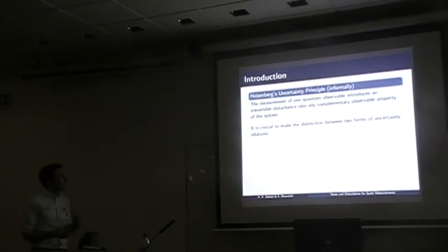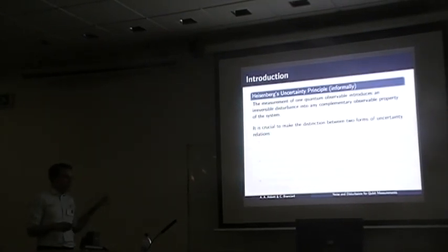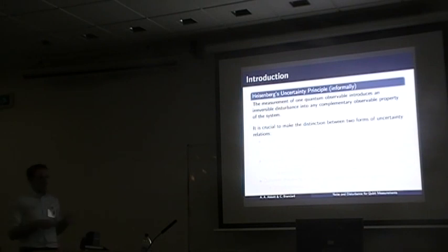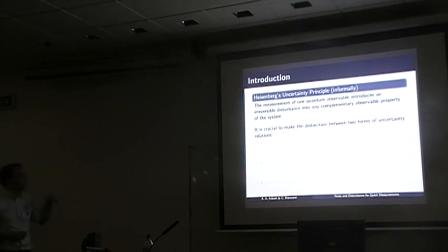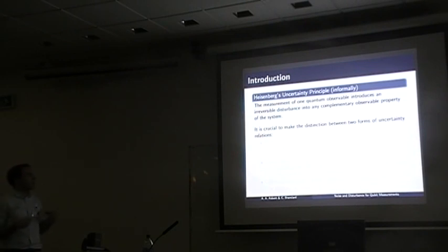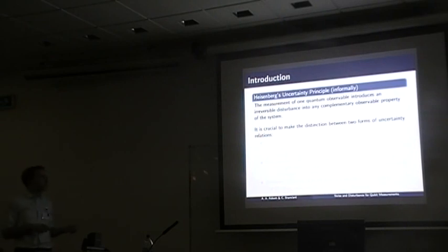Before getting into that, I need to clarify a couple of issues. As soon as I start talking about uncertainty relations, what comes to mind is normally Heisenberg's uncertainty principle. An informal way to state this is that the measurement of one quantum observable introduces an irreversible disturbance into any complementary observable — for example, position and momentum.